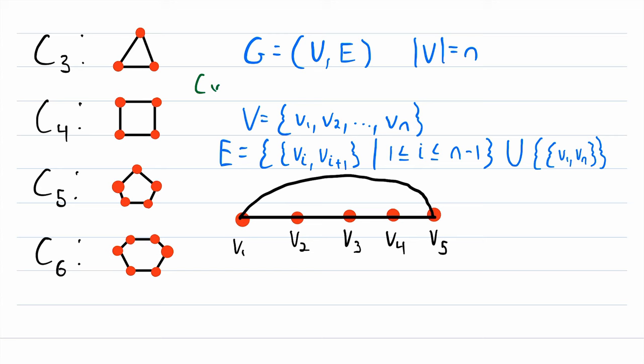One thing you might notice about these cycle graphs is pretty neat, cycle graphs are 2-regular. This means that every vertex in a cycle graph has degree two.